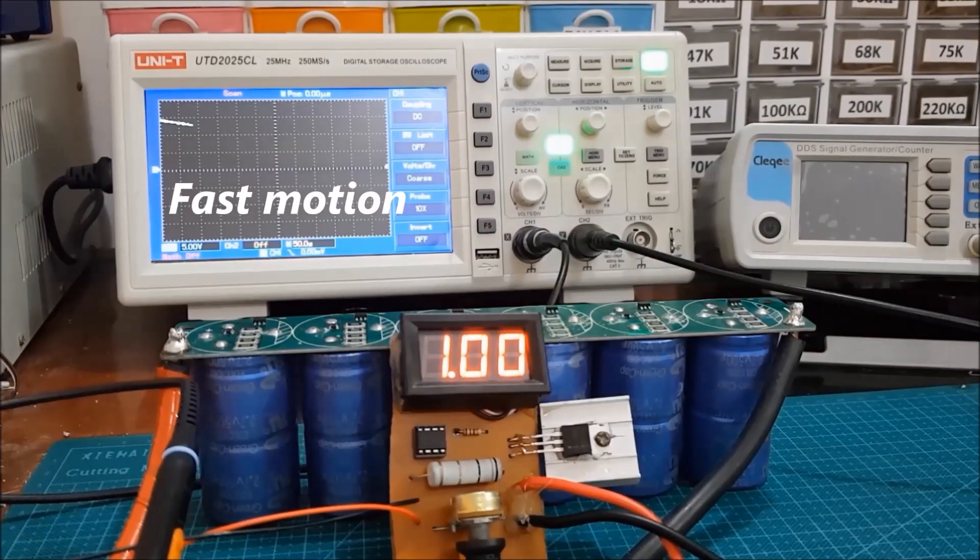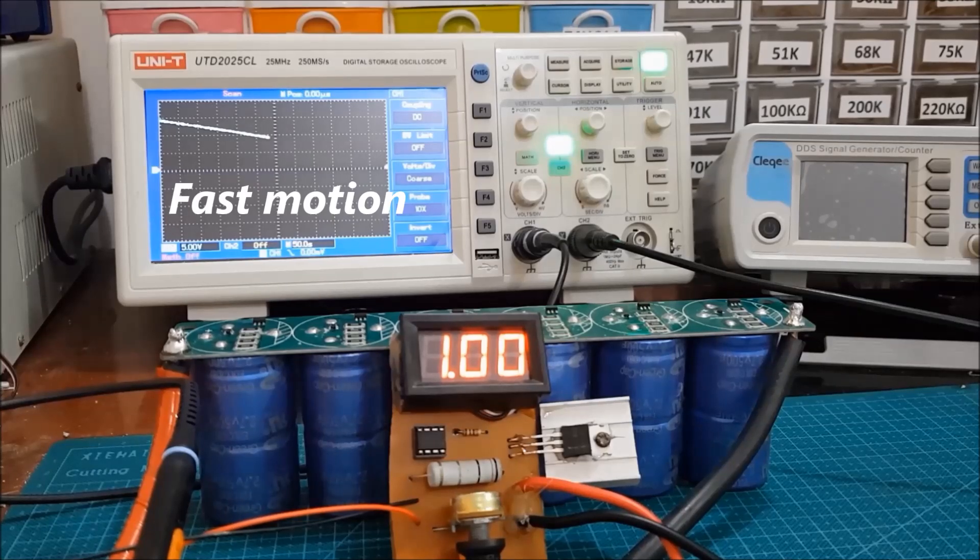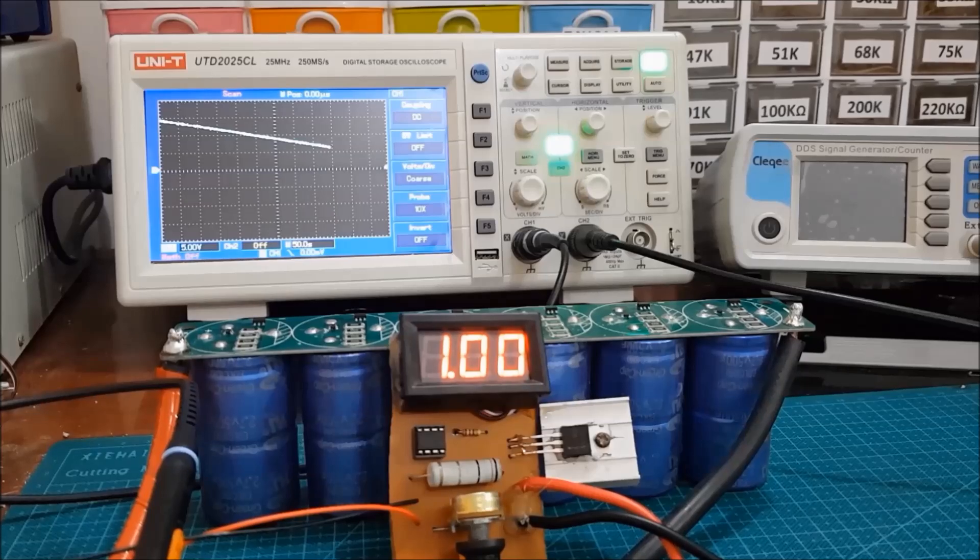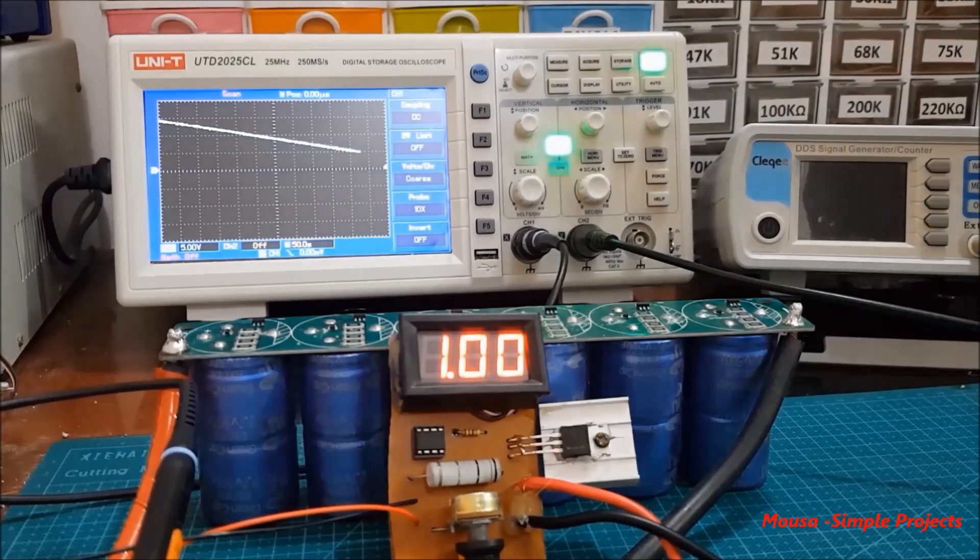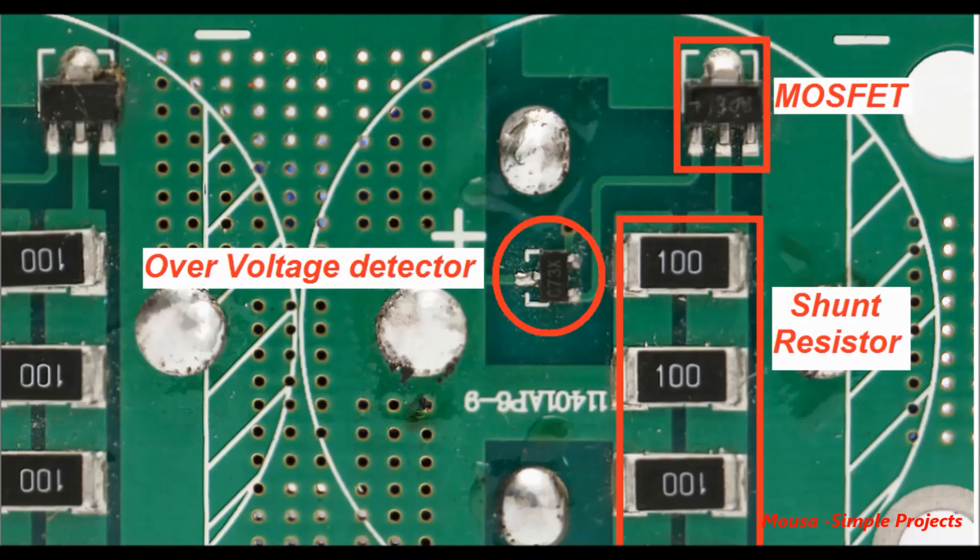Here I discharge the super capacitor by one amp constant current, and the oscilloscope draws the discharge curve. As you can see, the discharge curve is linear compared to the battery discharge curve, which is non-linear.